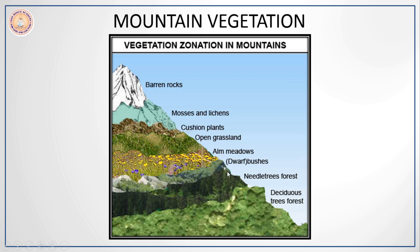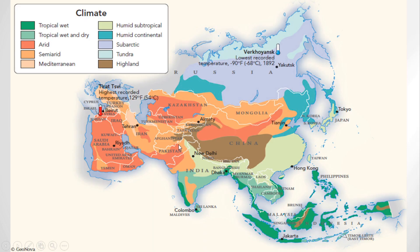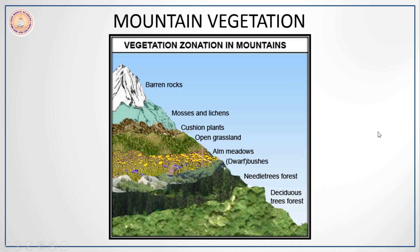The mountainous region of Asia consists of a climate which supports different types of vegetation depending upon its altitude. The mountainous type of vegetation is mostly found in the highland areas of Asia. In the Himalayas, for example, the foothills mostly have deciduous trees consisting of teak and sal.